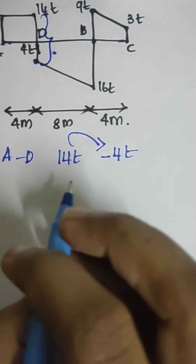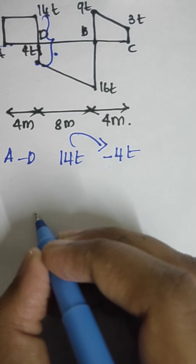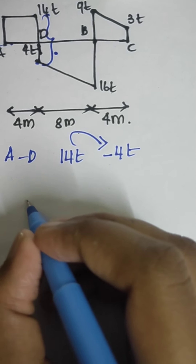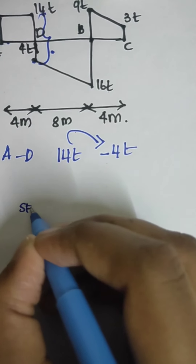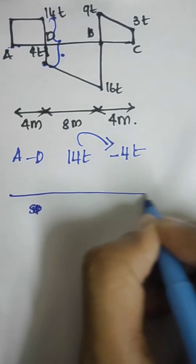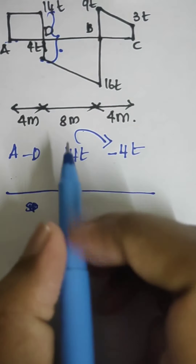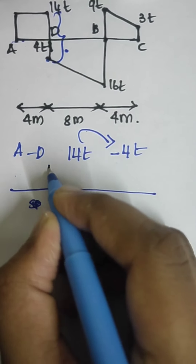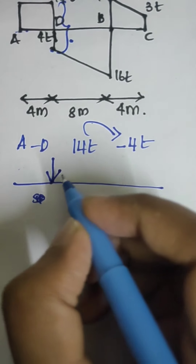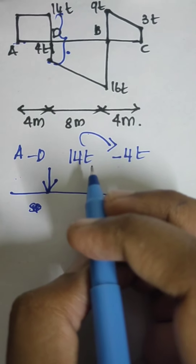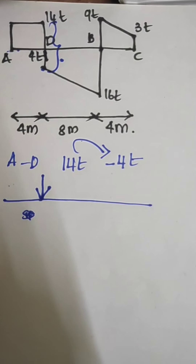Since there is a drop in the shear force, there will be a point load at D in the downward direction. We already know that if the shear force is constant there is no load, but since there is a drop, there will be a point load. A sudden change in shear force corresponds to a point load — it is just the opposite relationship.